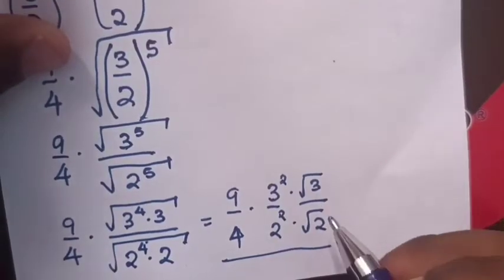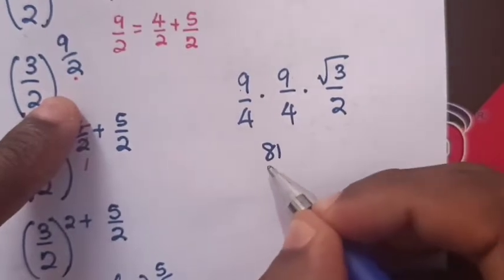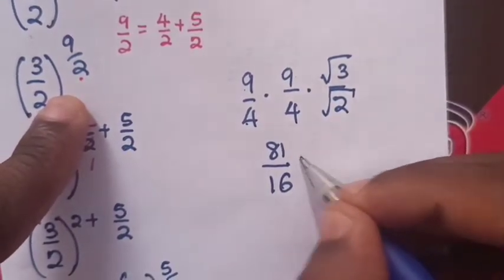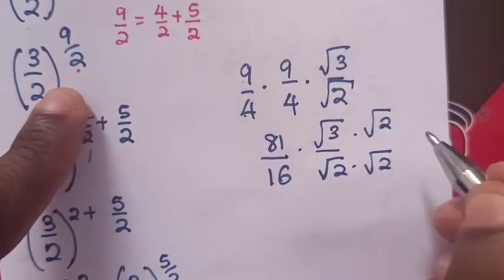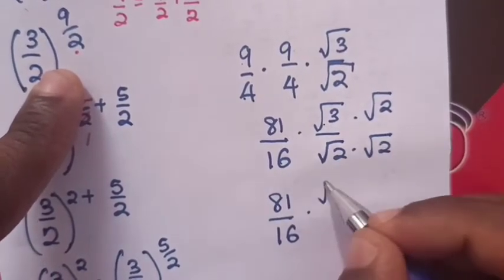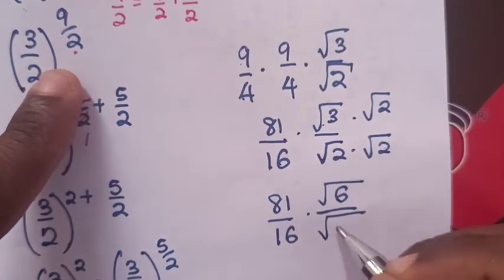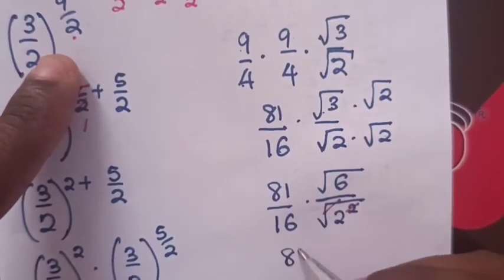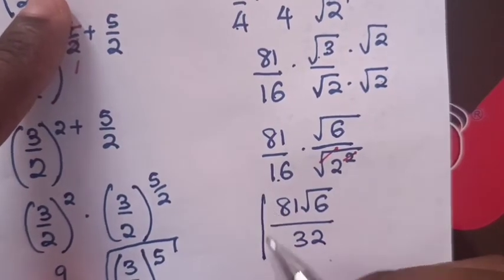Again times square root of 3 over square root of 2. Then 9 times 9 is 81 and 4 times 4 is 16, so it is 81 over 16 times square root of 3 over square root of 2. Then we rationalize the denominator by multiplying by square root of 2 in numerator and denominator. So it becomes 81 over 16 times square root of 3 times square root of 2, which is square root of 6, over square root of 2 times square root of 2, which is square root of 2 squared. The square root and square cancel, leaving 2. So the final answer is 81 square root of 6 over 32.